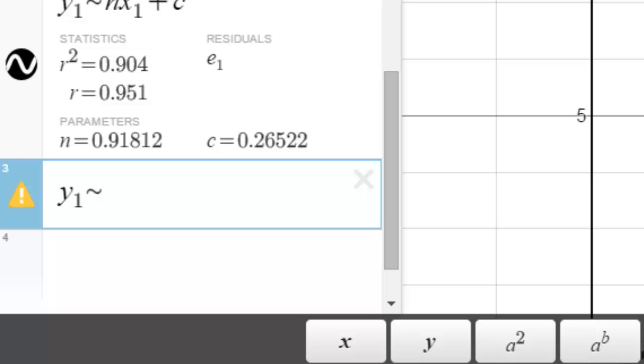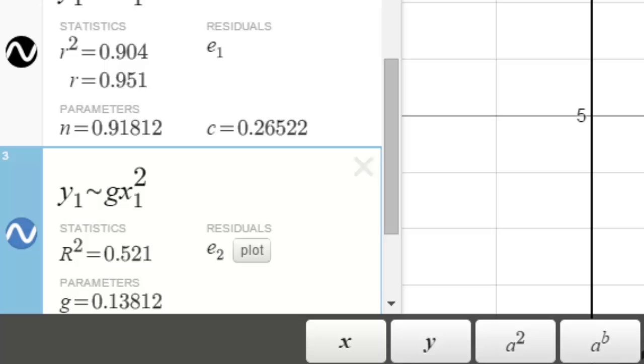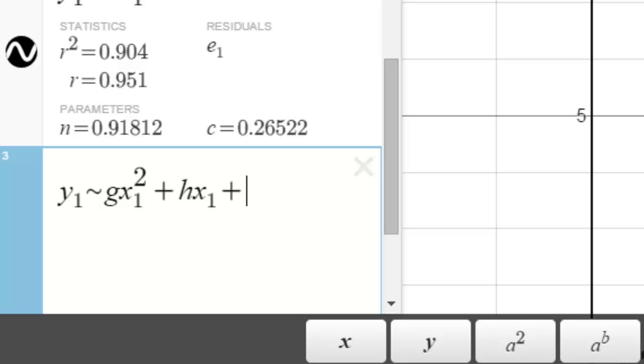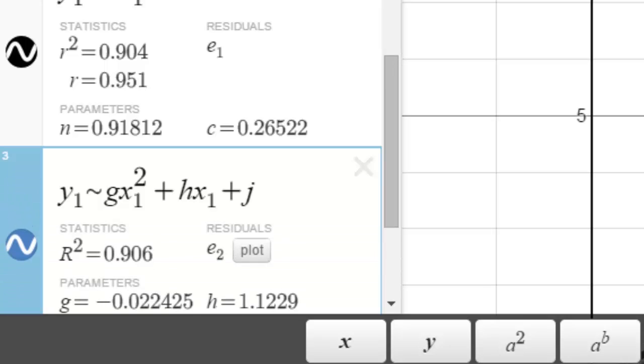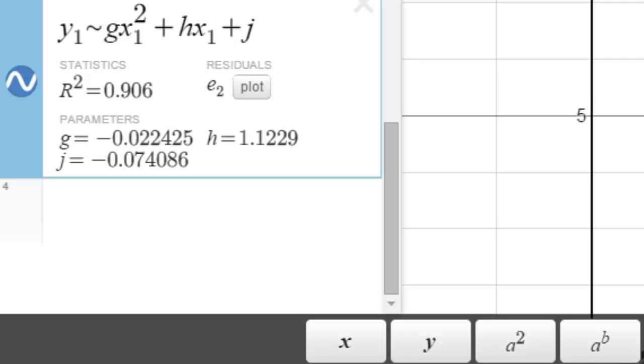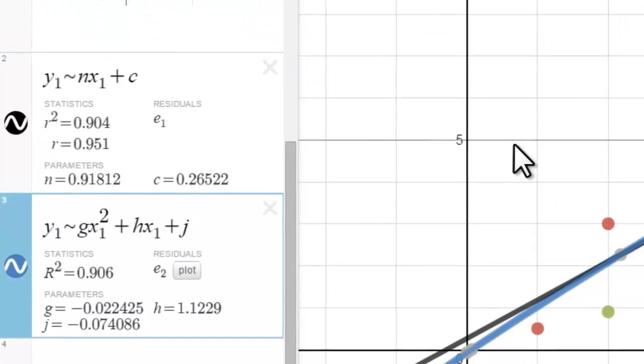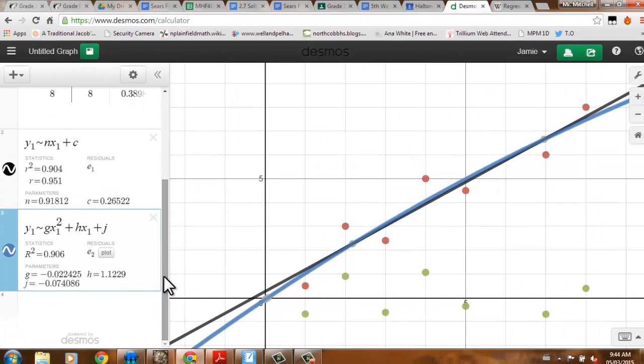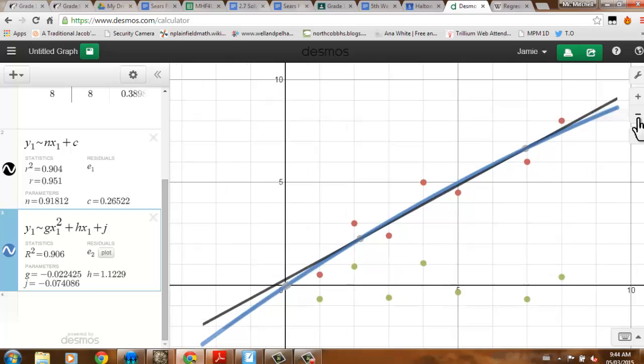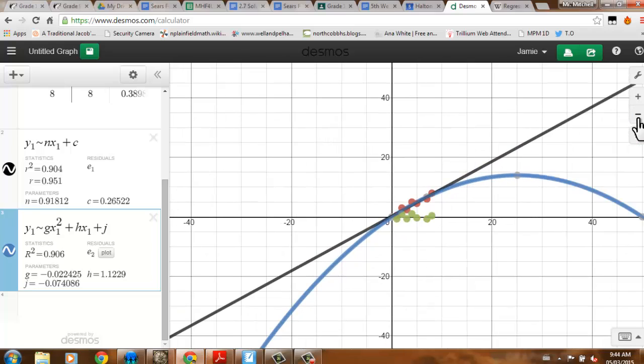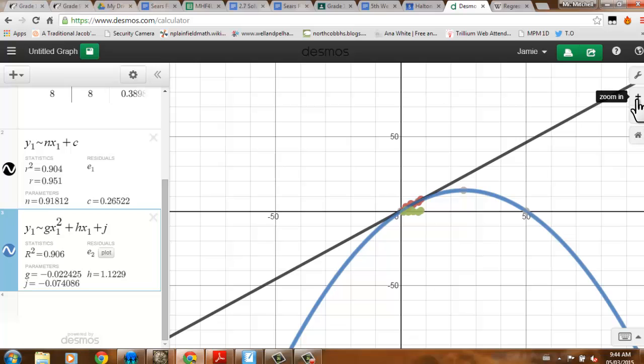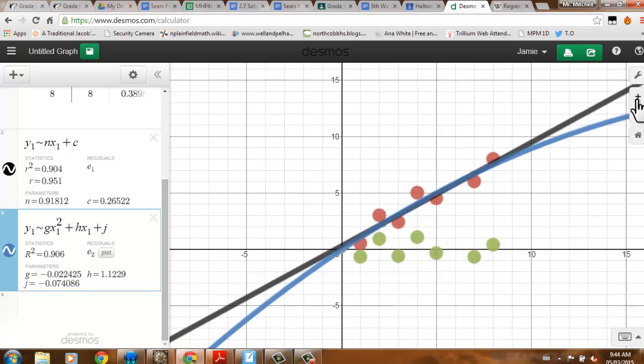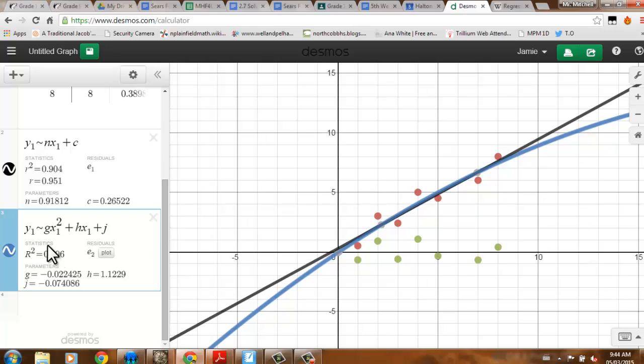Remember our quadratic models. Let's use some values: g times x1 squared plus h times x1 plus j. That's our equation for a parabola in standard form. If I zoom out a little bit, there I can see how it kind of curves away from the data.